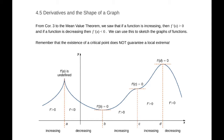From Corollary 3 to the Mean Value Theorem — which is a theorem in its own right because it is a very important concept — we saw that if a function is increasing, then the derivative f' is greater than 0 on that interval, and if a function is decreasing on a certain interval, then f' is less than 0. We can use this to sketch the graphs of functions.